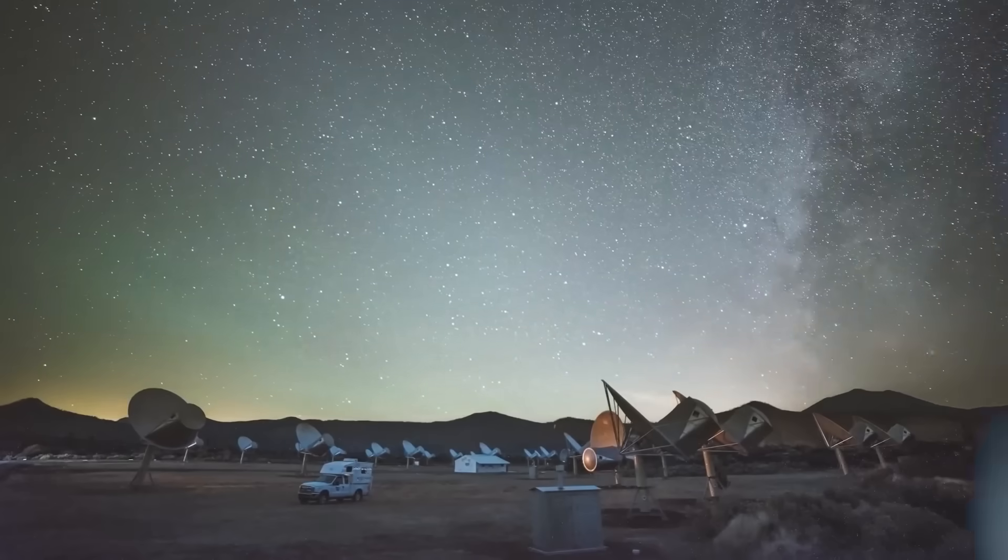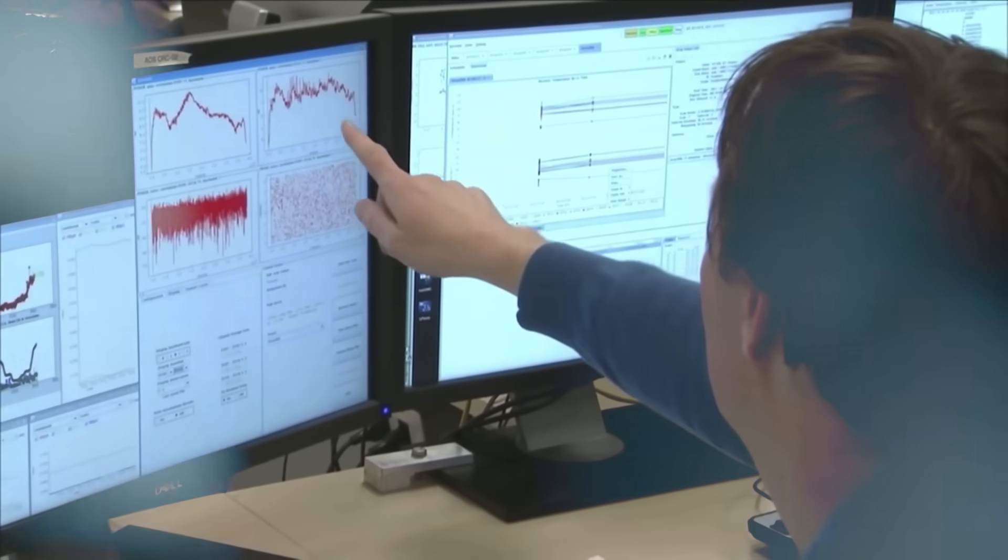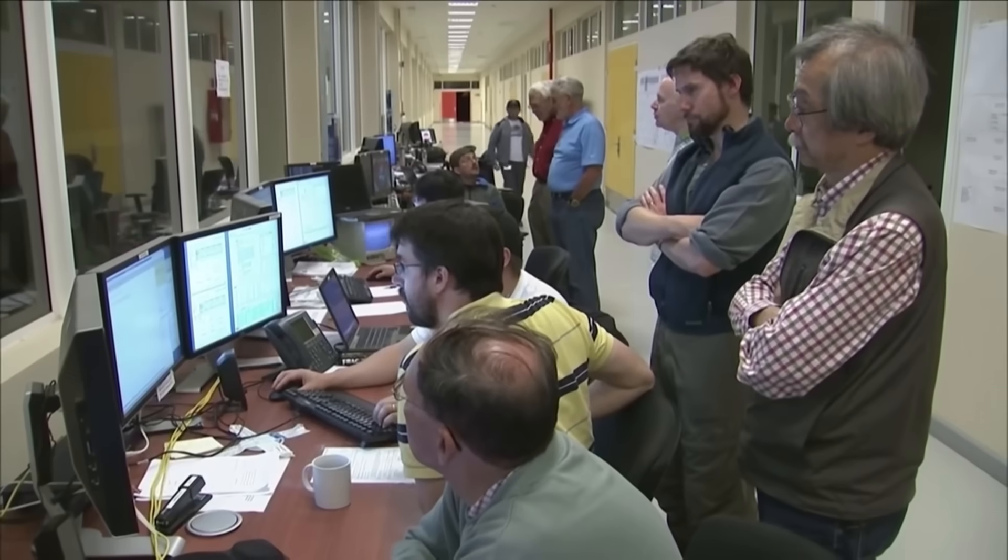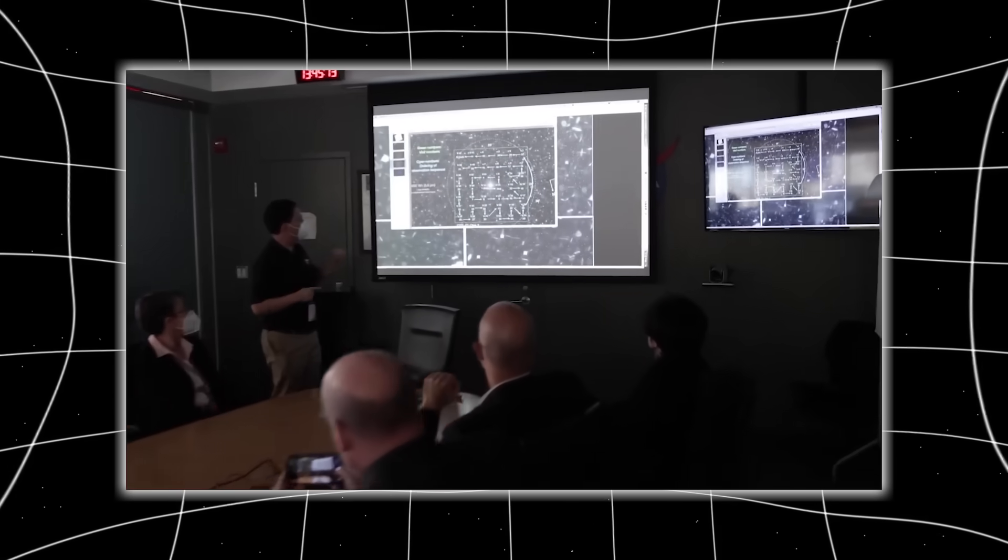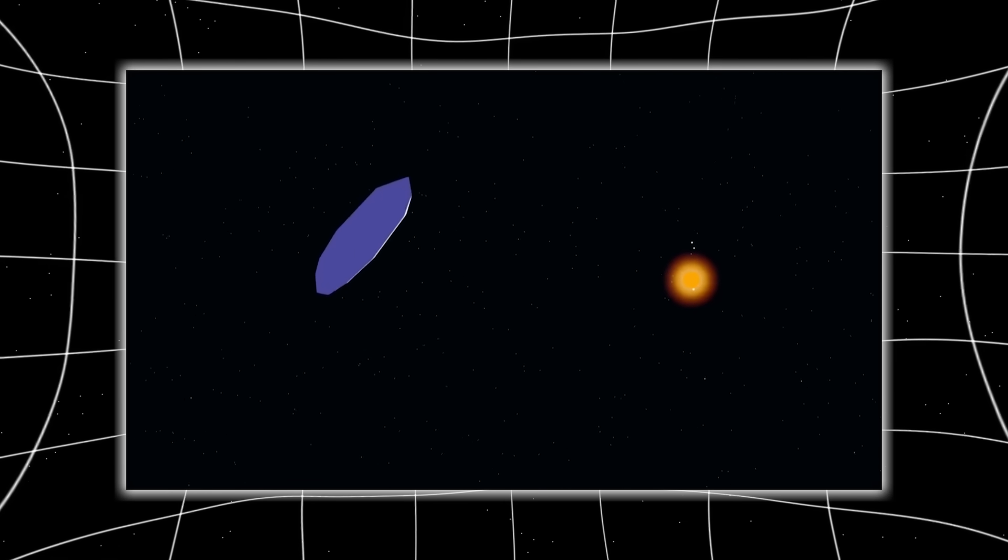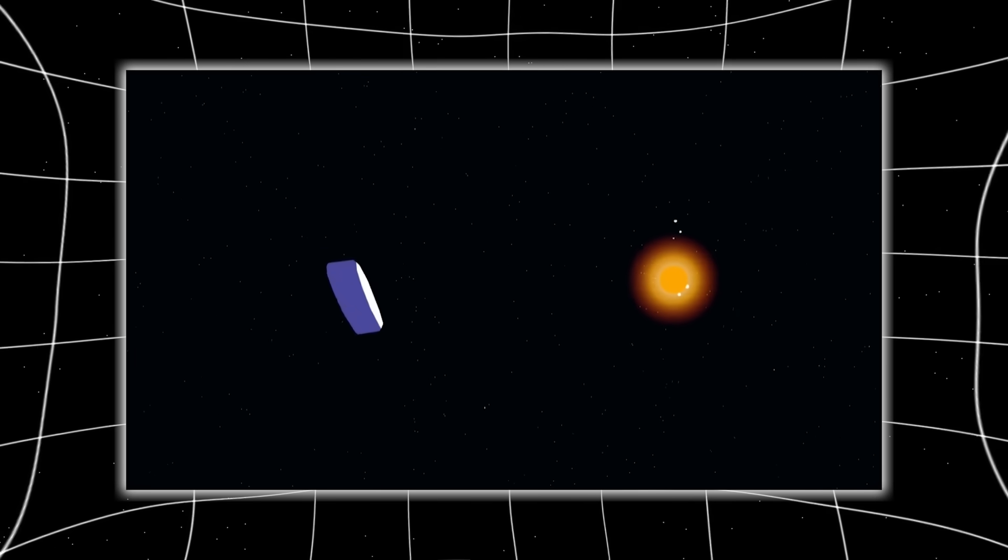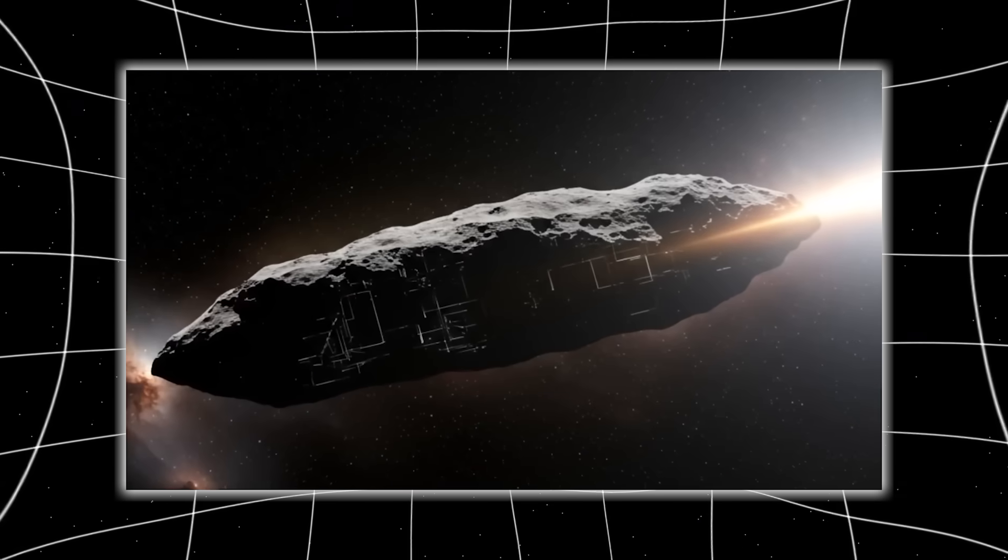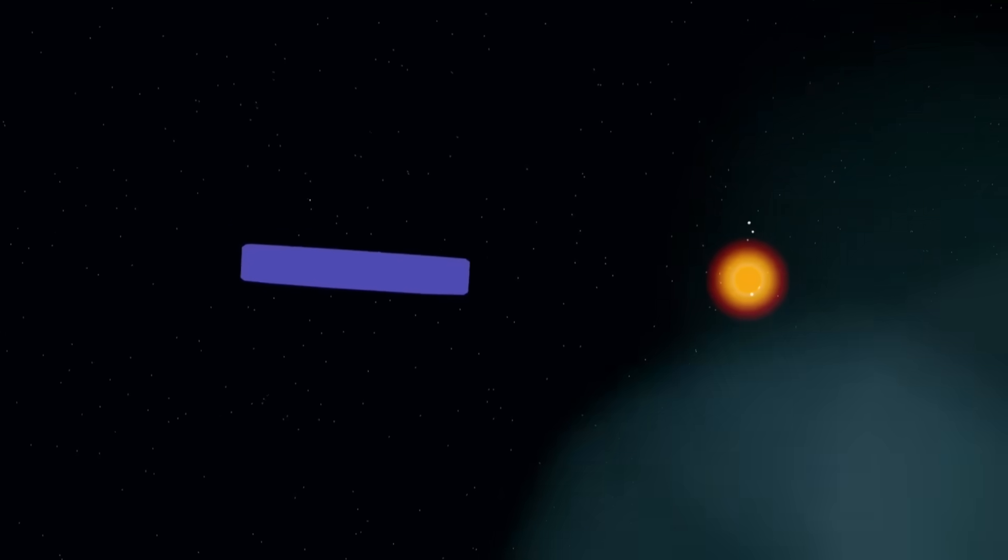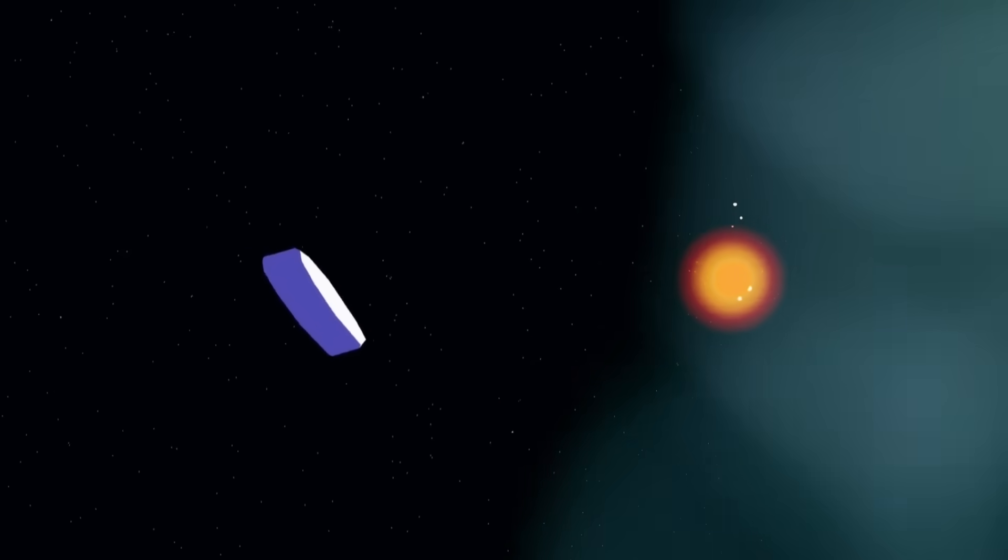With each of these objects, we were left with more questions than answers. But 3I Atlas is different. It combines the inexplicable brightness of Oumuamua with the trajectory of Borisov. It doesn't behave like a rock, but it also doesn't fit neatly into the category of a comet. And now, astronomers are considering something even more radical. These may not be isolated events. They may be part of a pattern, a wave, a slow, deliberate sequence of contact disguised as randomness. Because for centuries, our skies were empty. Then, suddenly, they weren't. And the only variable that changed was us.